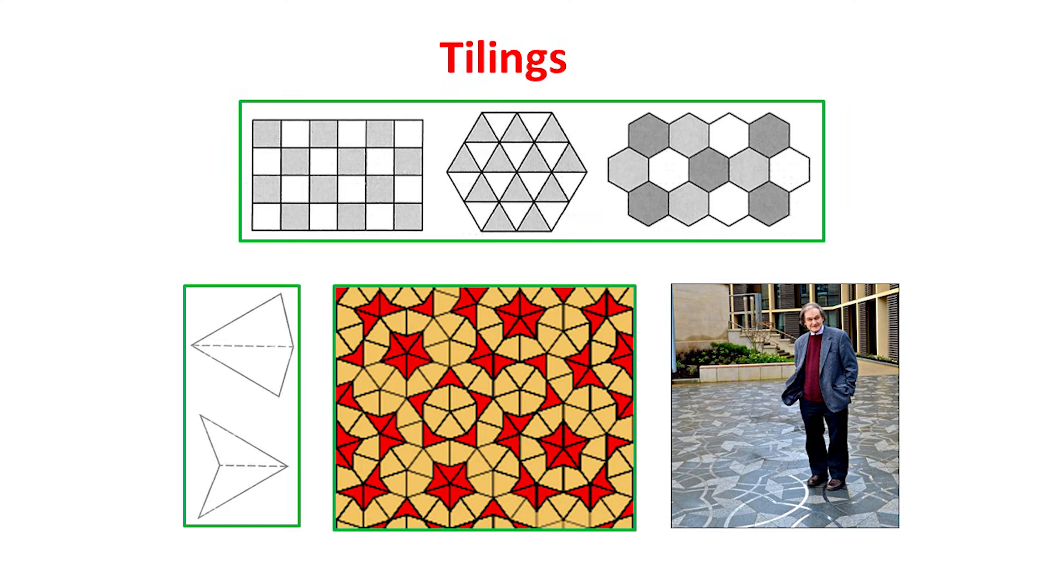Suppose that you wish to tile the floor of your bathroom with tiles that are all identical regular polygons. This can be done, but only in three ways. One is a familiar tiling made from squares. But there are also tilings with equilateral triangles and with a honeycomb pattern of regular hexagons. All three of these tilings can be extended as far as we like and look the same everywhere.